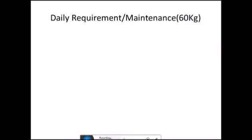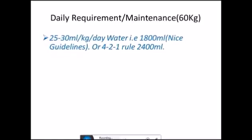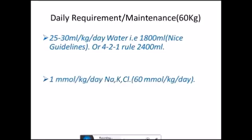The daily requirement or maintenance in a 60 kg male. This is an example you should listen to and see carefully. These are from NICE guidelines and also the 4-2-1 rule. The daily water requirement is 25 to 30 ml per kg per day of water, that is 1800 ml according to NICE guidelines, or it may be 2400 ml by 4-2-1 rule. I'll tell you what is 4-2-1 rule. One millimole per kg per day of sodium, potassium, and chloride, everything. That is 60 millimoles per day for a 60 kg person. The glucose requirement is 50 to 100 grams per day of glucose.